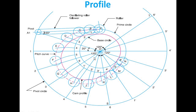Make equal parts of the outstroke and return stroke arcs — say 6 and 6. These will intersect the pivot circle at points 1, 2, 3, 4, 5, 6, 7, and 1′, 2′, 3′, 4′, 5′, 6′, etc. Take the distance A1–O (130 mm) and with each point 1, 2, 3, 4, 5, 6 as center, cut the prime circle at different points 1, 2, 3, 4, 5, 6, 1′, 2′, 3′, 4′, 5′, 6′, and so on.